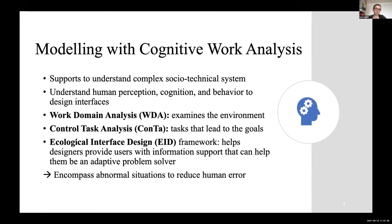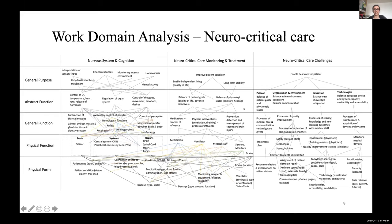With all these insights we also used the Ecological Interface Design approach, which helps users come up with an interface that supports the user with complex relationships, showing them in a way that the user can become an adaptive problem solver and encompass abnormal situations or reduce human errors. The Work Domain Analysis is an abstraction hierarchy with five levels of abstraction — from the general purpose at the top down to physical form — combining all the different relationships between elements.